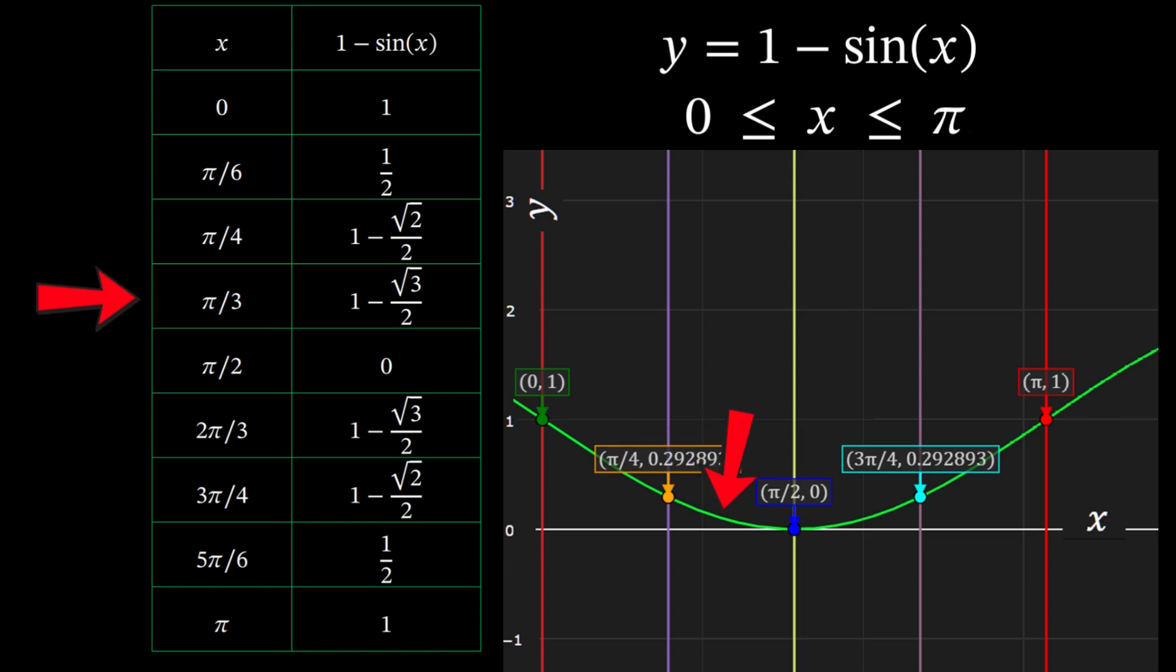At x equals pi over three, y equals one minus square root of three over two. At x equals pi over two, y equals zero. And so on, then as x increases to pi, y climbs back up to one.